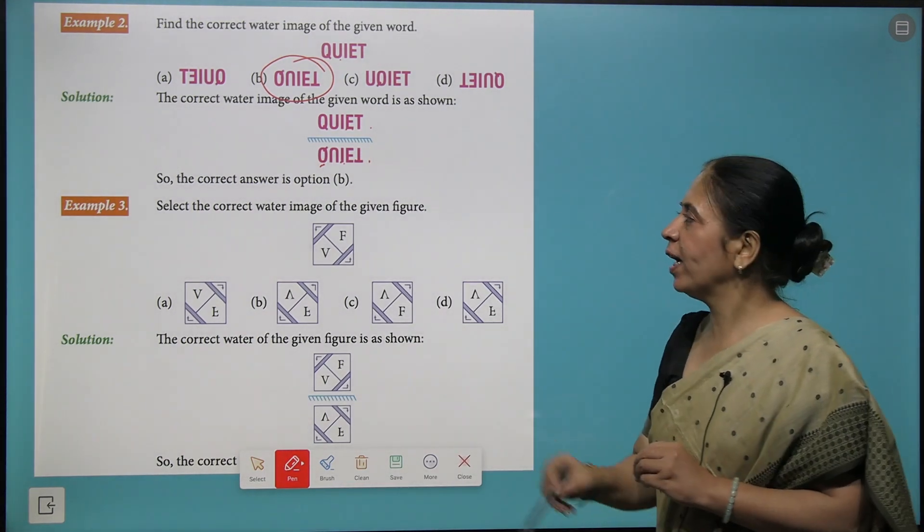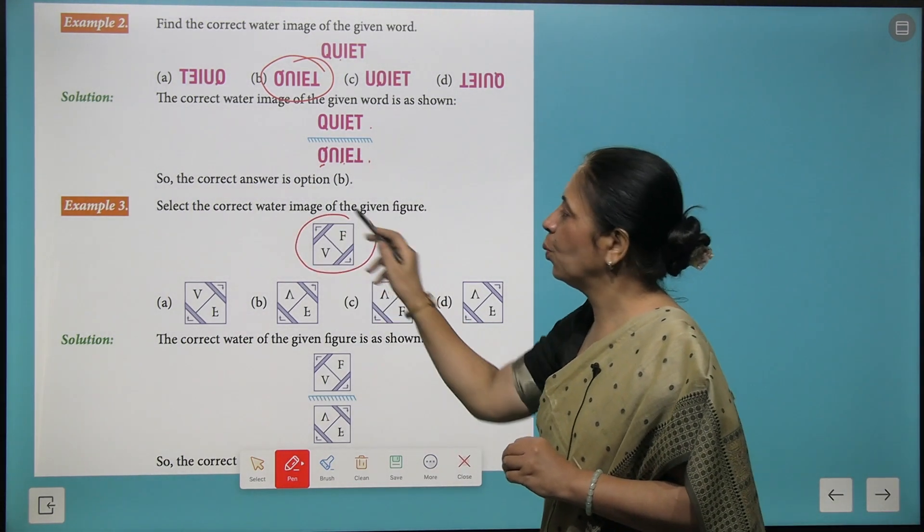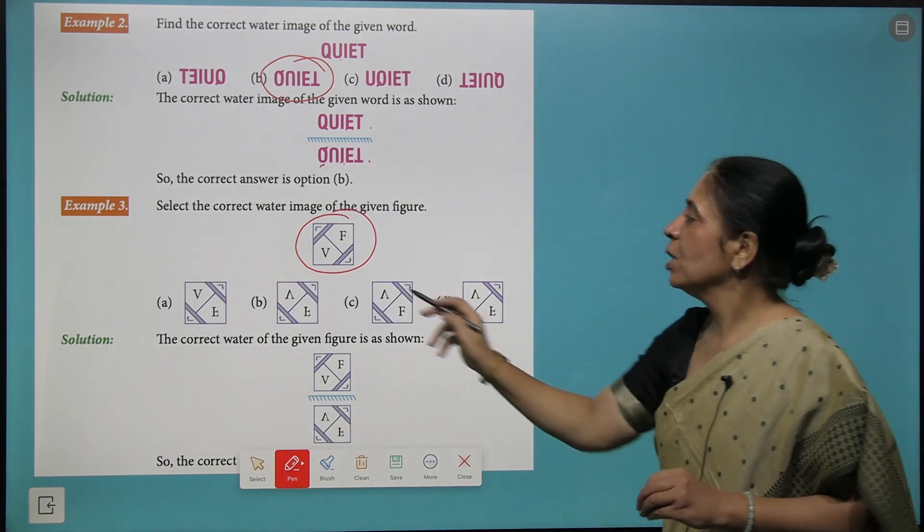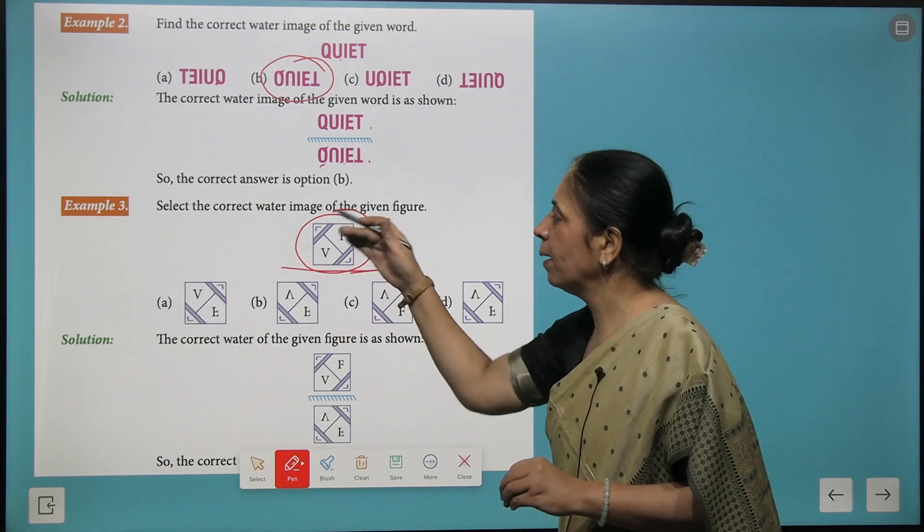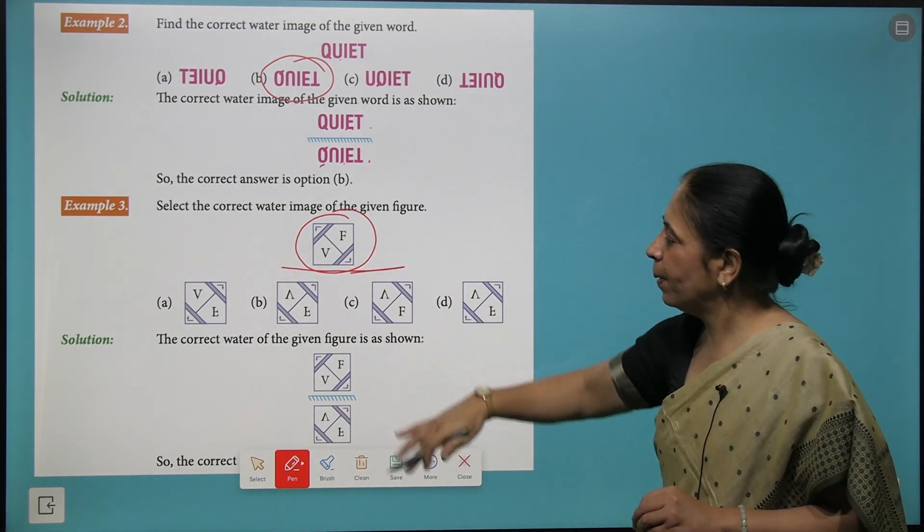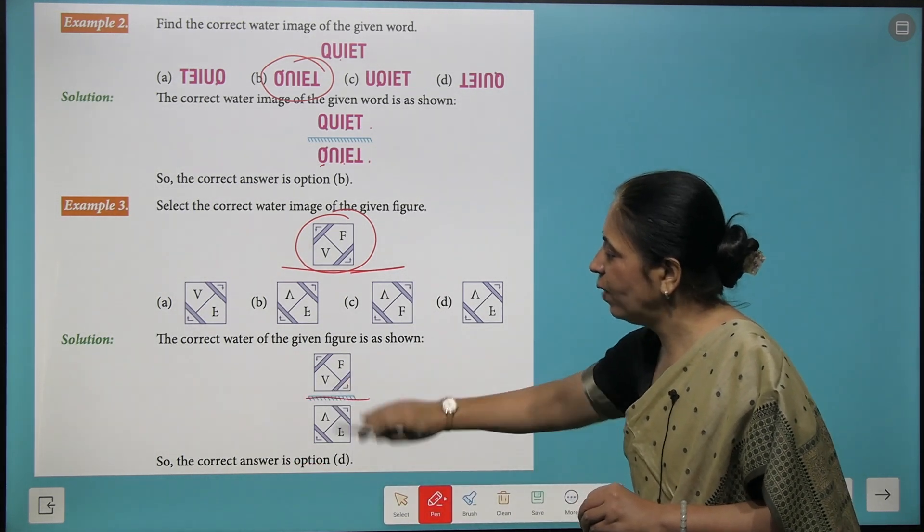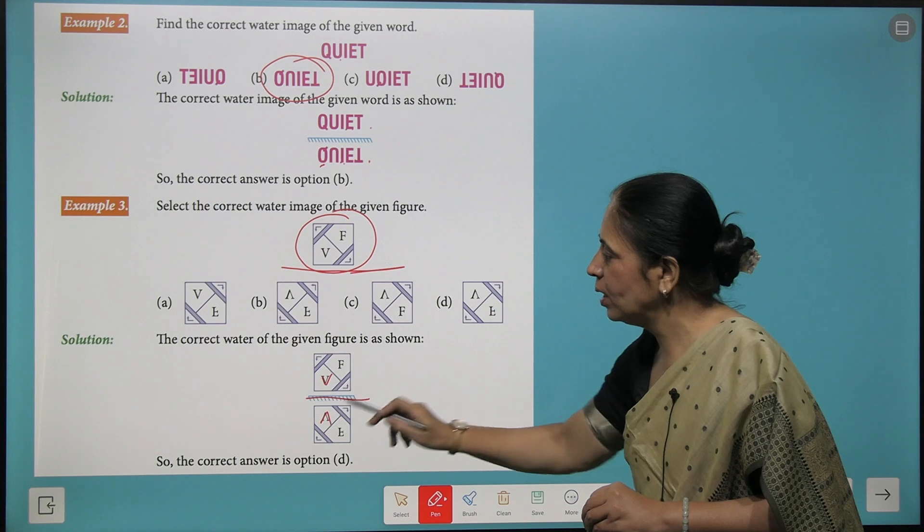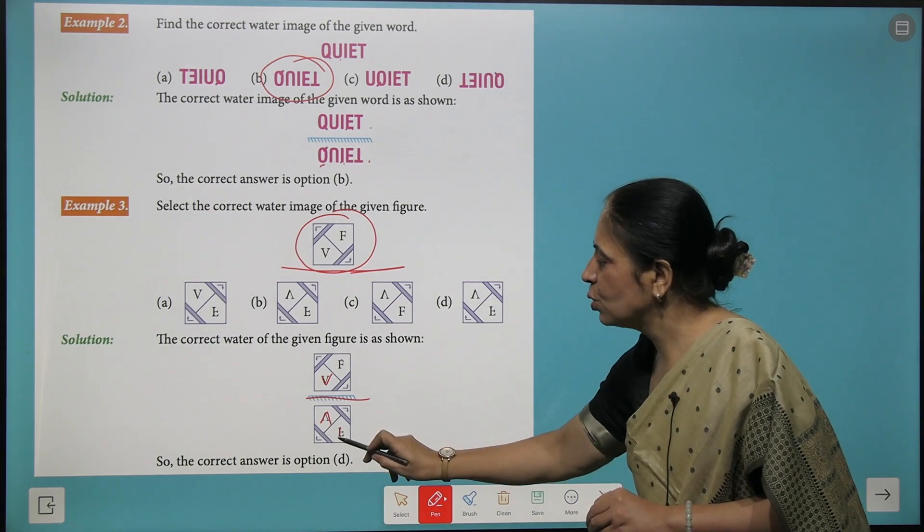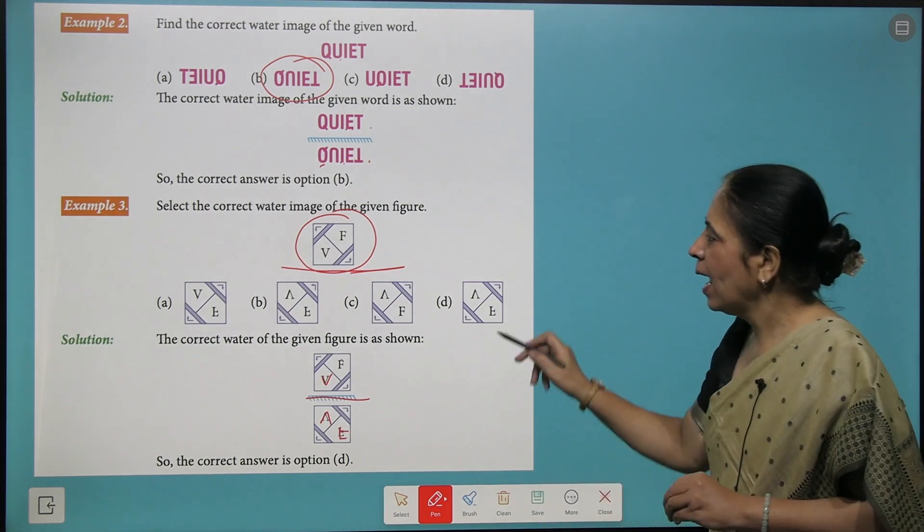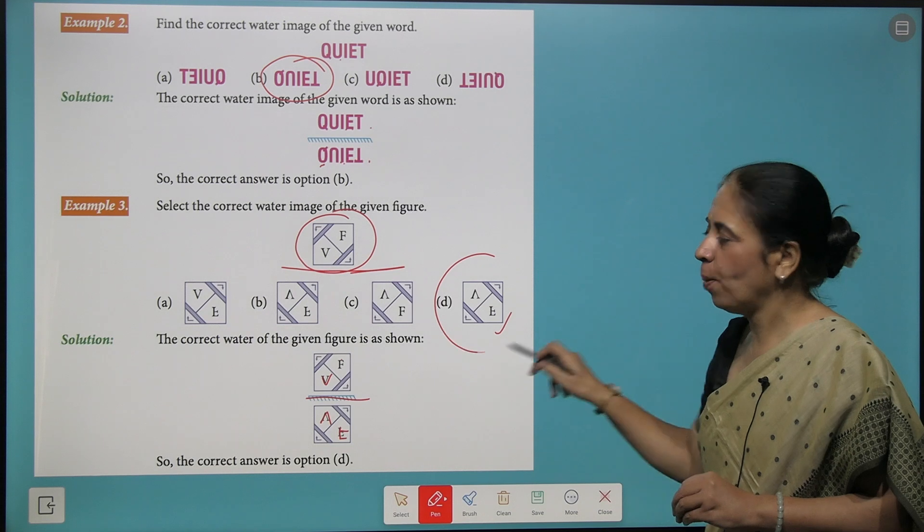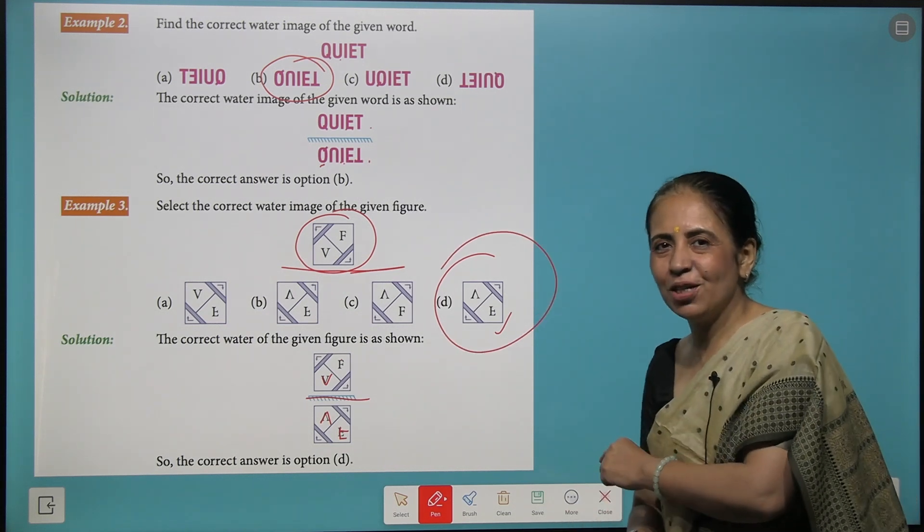Let's take another figure. And for this figure you want to form the water image. So water image means something below right. And something below means you are going to make a reflection at the bottom. So V turns to this V and F turns over here like this. And we come with the right option D. Understood?